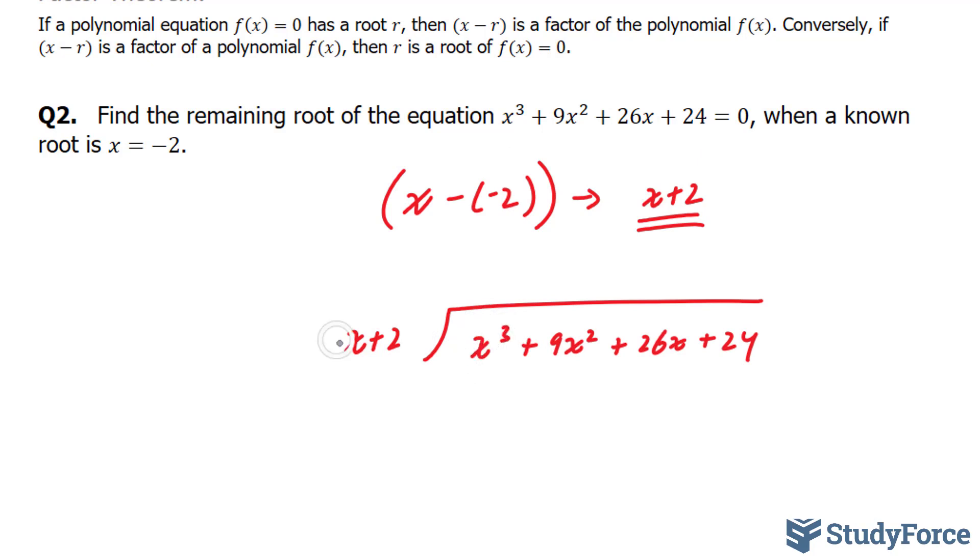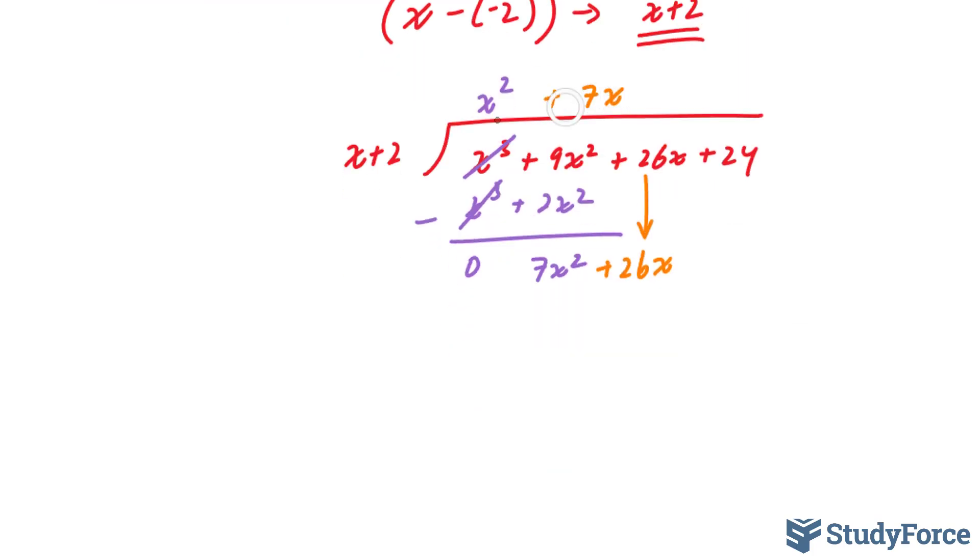Now, we ask ourselves, what is this term divided by x? It's x². Multiplying this term with these two, x³ + 2x². Subtracting, we end up with 0 and 7x². Next, I'll bring this term down, positive 26x. Dividing 7x² with x, we end up with positive 7x. 7x times x is 7x², and 7x times 2 is positive 14.